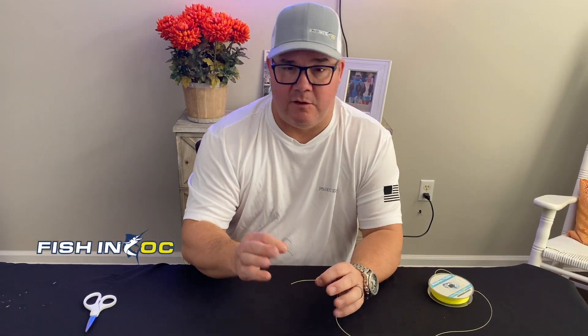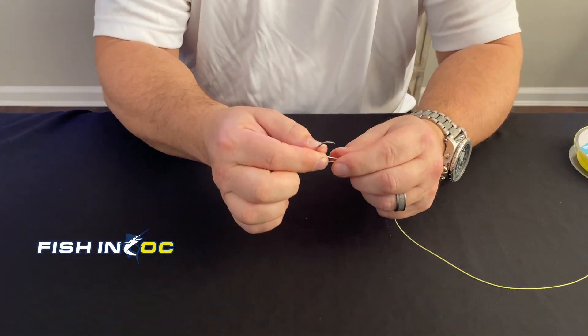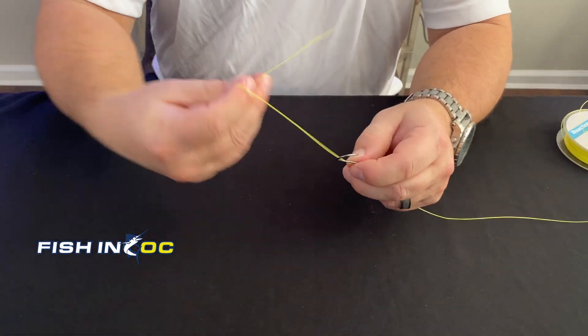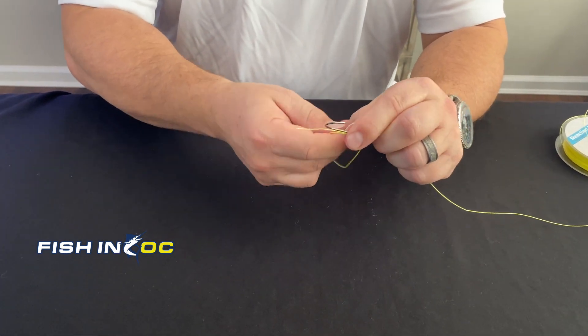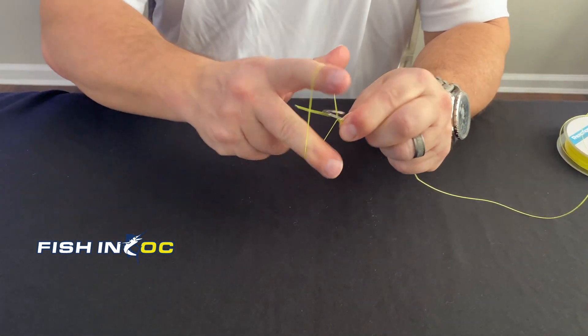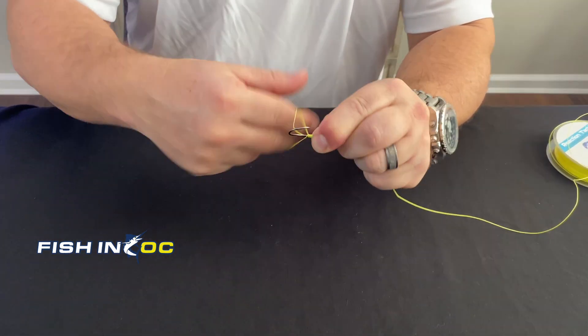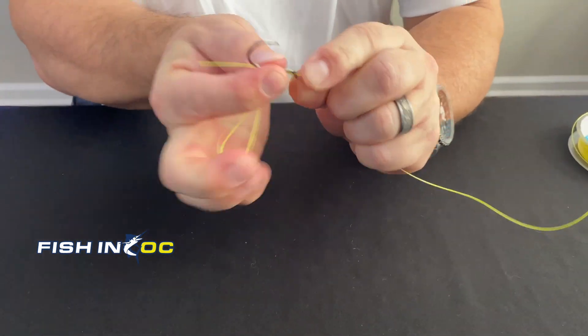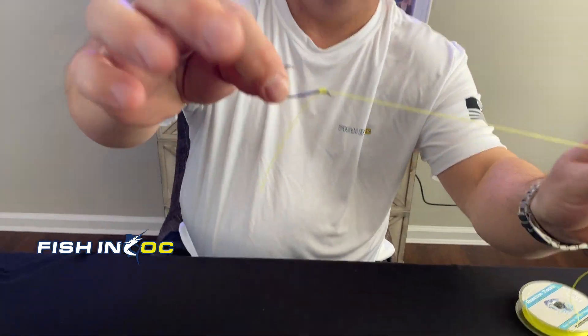All right, one more time just so you can see how quick and easy this snell knot is. Line through the eye of the hook, make your loop, pinch it against the eye. Fingers up through the bottom. Around once, twice, three, four, six or seven times. Pinch, pull, pull, and there you go. Simple, perfect snell knot, ready to roll.